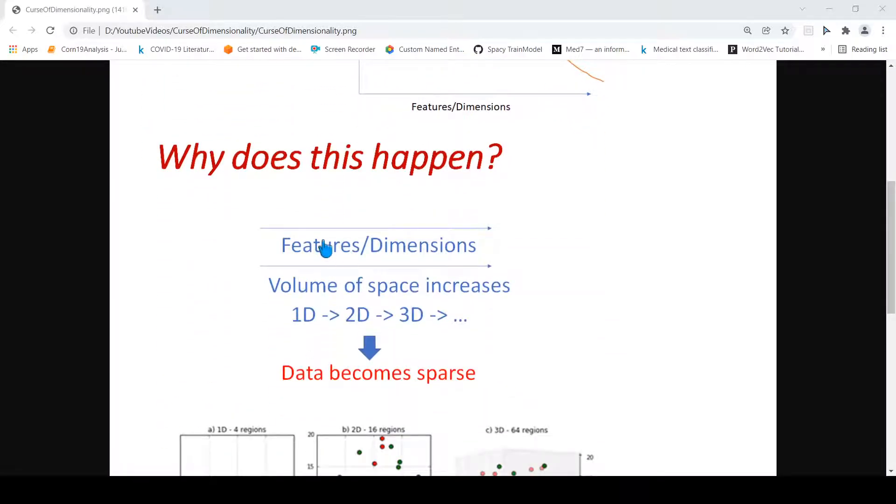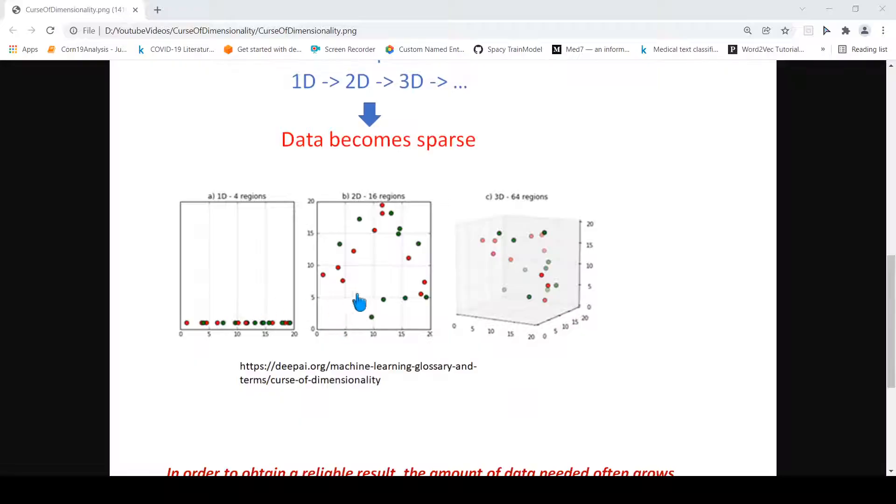As the feature dimensions increase in your data, what happens is that the volume of space increases. When you have one dimension it is a line, in two dimensions it is a plane or a square, and in three dimensions it becomes a cube. So when this volume of space increases, as shown in this figure, the data becomes sparse. For example, this is your 1D - you can split it into four regions. If you go to 2D it becomes 16 regions, and if you go to 3D it becomes 64 regions. The data itself can actually spread in a very sparse manner. Now what happens because of this - what happens when the data becomes spread in a sparse manner?